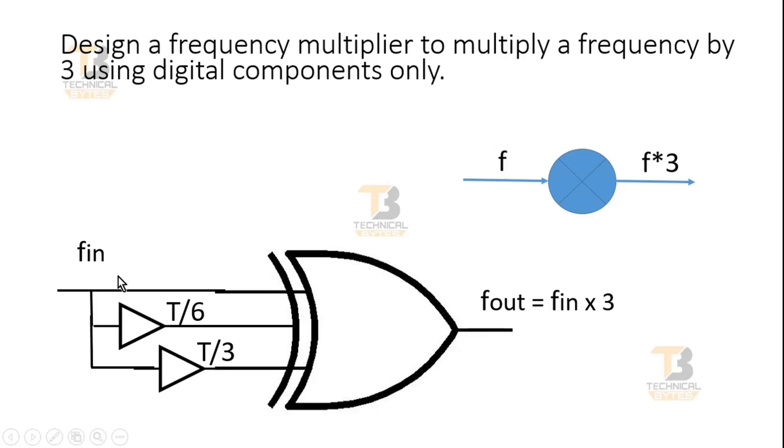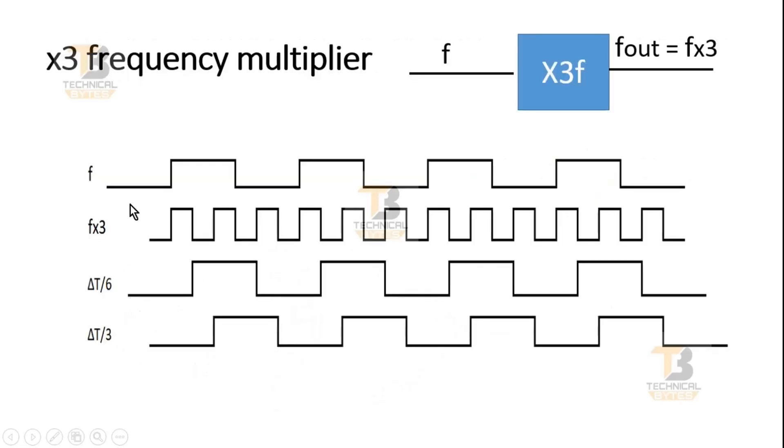Now let me show you the waveforms. This is the x3 frequency multiplier. The waveforms are: this is F input, this is output F into 3, this is T by 6, and this is T by 3 as I used in my logic diagram. Let us put the XOR gate and see whether I'm getting F into 3 or not.